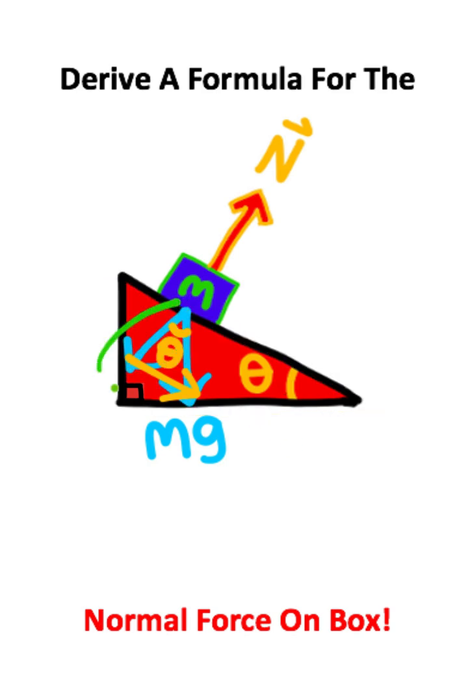Now if I focus on this adjacent component of the weight force, we're taught in trigonometry that the adjacent side of the triangle is associated with the cosine. So this component is going to be the product of mass and gravitational acceleration multiplied by the cosine of the angle for the incline.